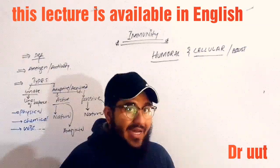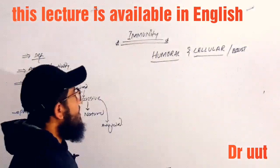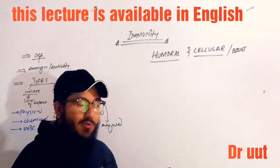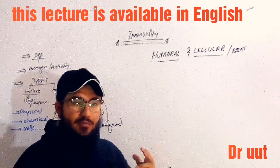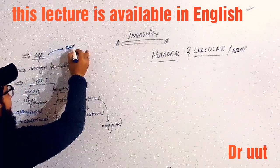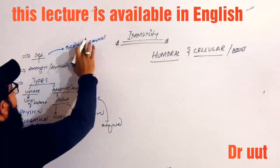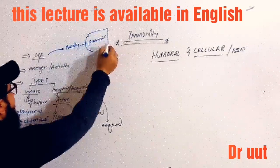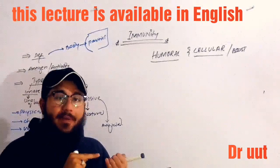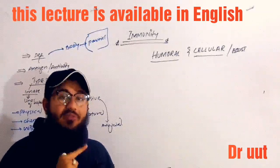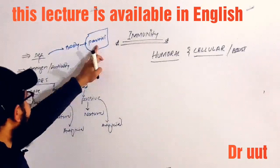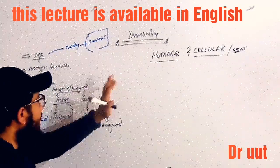Immunity. We want to know the meaning of immunity. Immunity is the ability of a body to fight against germs or foreign particles. These foreign particles can include coronavirus, bacteria, any virus, or dust particles. The ability to stop these particles is called immunity.